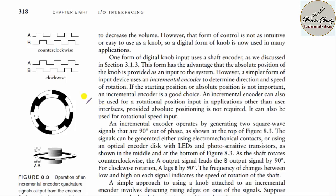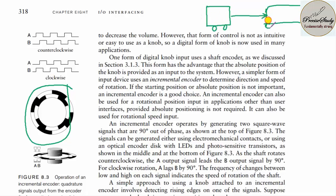Let us talk about encoders — specifically wheel encoders. Suppose we have a robot. If we want the robot to navigate from one place to another, we use wheel encoders. The number of rotations it has made is used to calculate the distance traveled by the robot from its initial position.